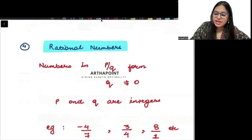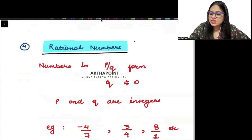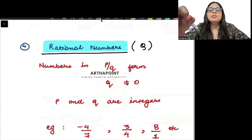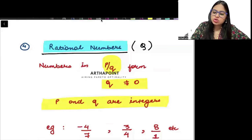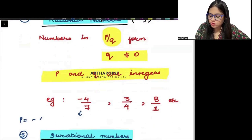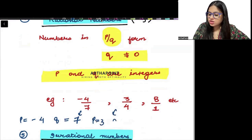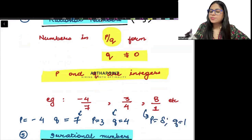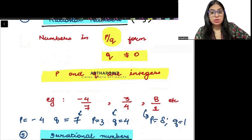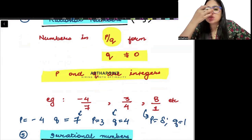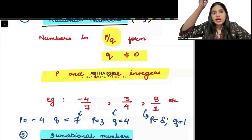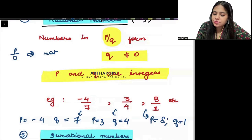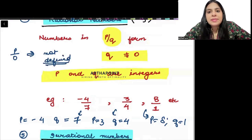Then we have rational numbers. Rational numbers are represented by Q. A rational number is anything in P by Q form, Q not equal to 0. P and Q can be any integers, negative or positive. For example, P is minus 4 and Q is 7; or P is 3 and Q is 4; or P is 8 and Q is 1. Remember, Q cannot be 0, because anything divided by 0 is not defined.